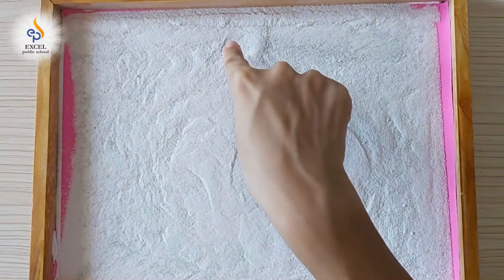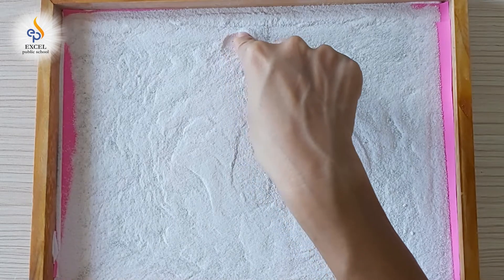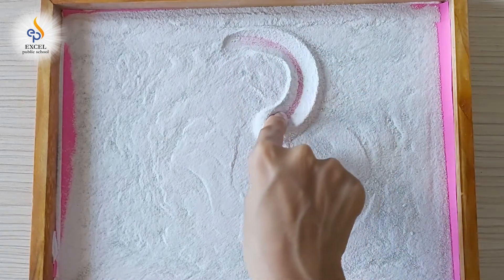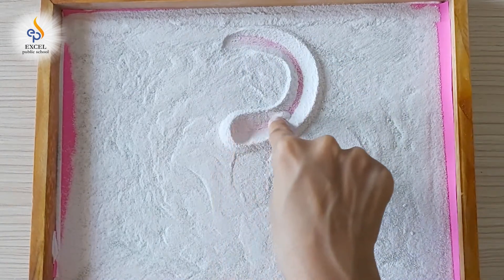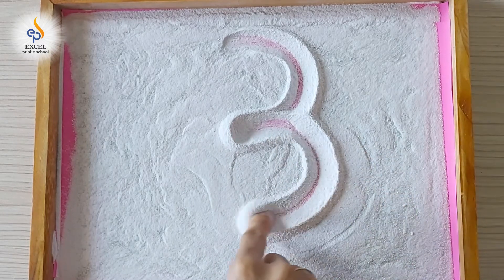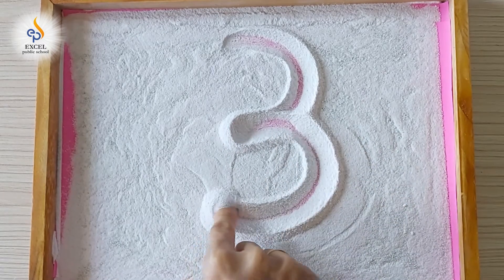Now, shall we learn how to write number three using our rangoli tray? First, we will write a tummy curve and then one more tummy curve. So, this is number three.